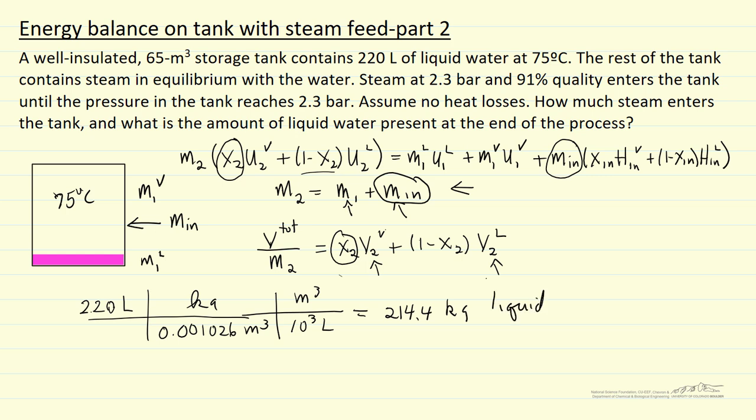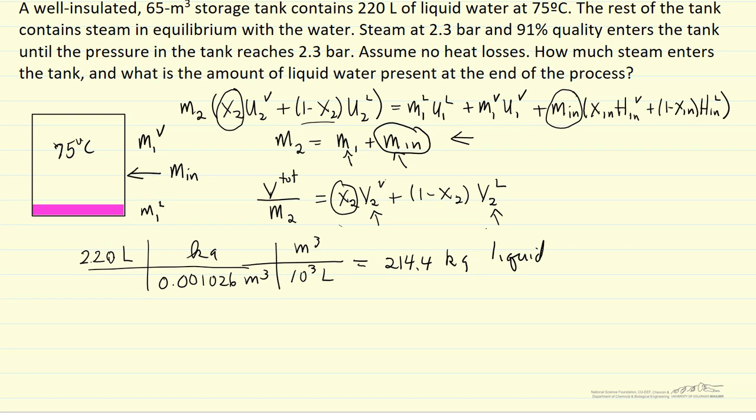Well, the total volume - if we want to get now the vapor - the total volume is 65 cubic meters. We can subtract the volume of liquid, which 220 liters is 0.220 cubic meters. So that's the total volume of vapor.